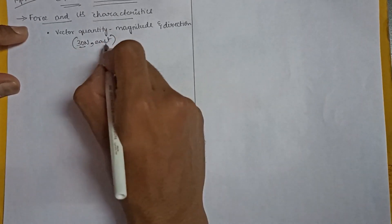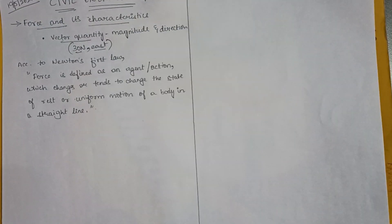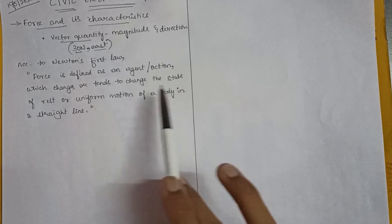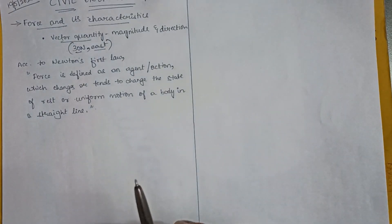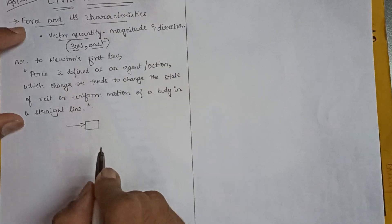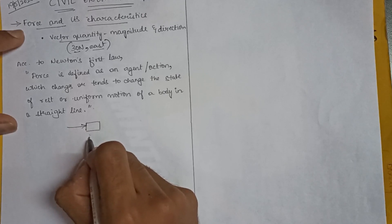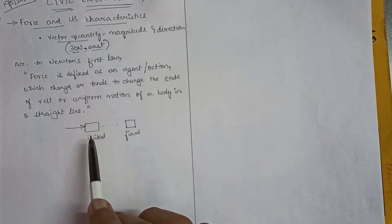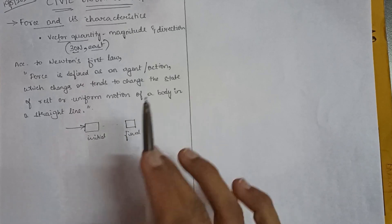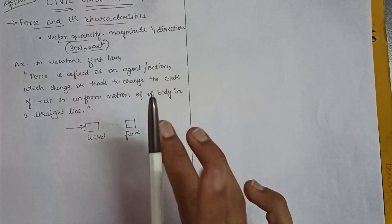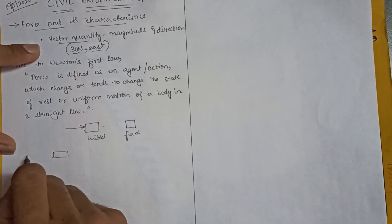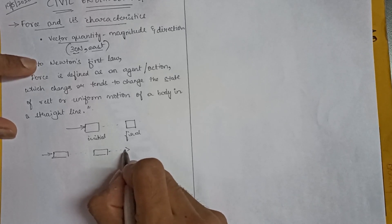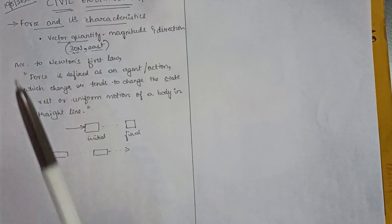That is why force is called a vector quantity — it has both magnitude and direction. According to Newton's first law, a force is defined as an agent or action which changes or tends to change the state of rest or uniform motion of a body in a straight line. When a body is at rest and you apply a force, it tends to change its position from the initial to the final position, in a single direction. If a body is in constant uniform motion and you apply force, the speed increases and the uniform motion gets altered, going with a higher velocity.